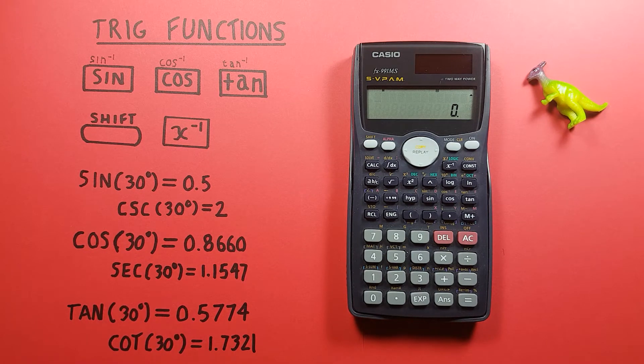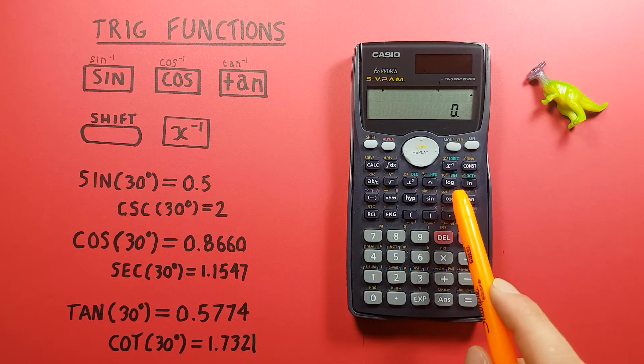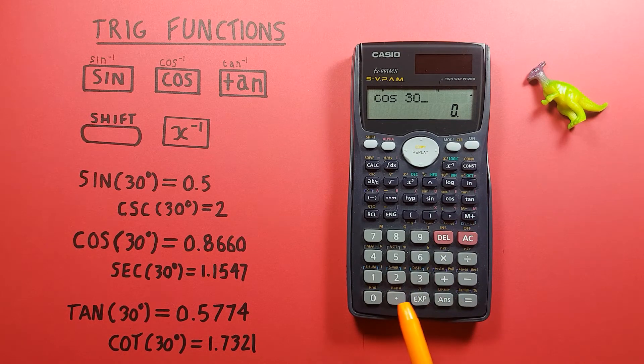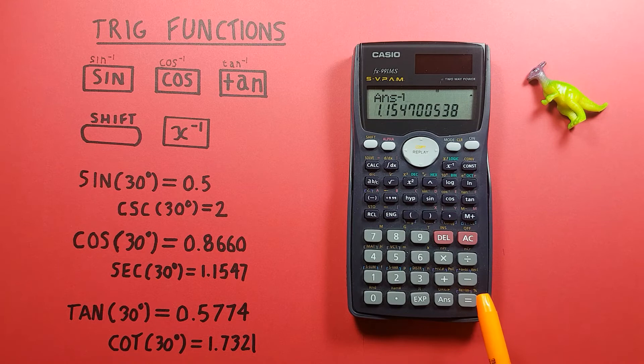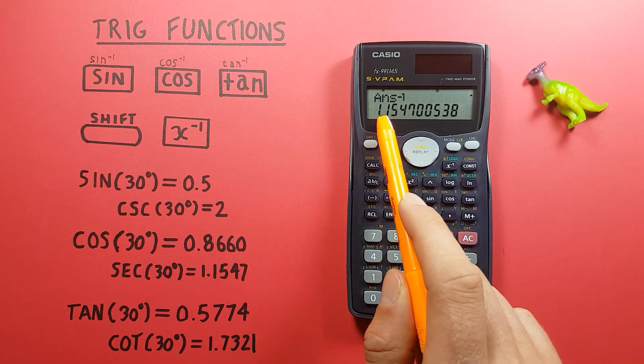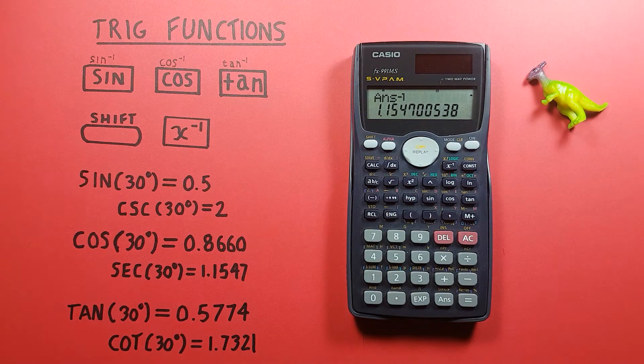Secant same thing but done with cos. So if we go cos 30 equals and then inverse that equals we get a secant of 1.1547.